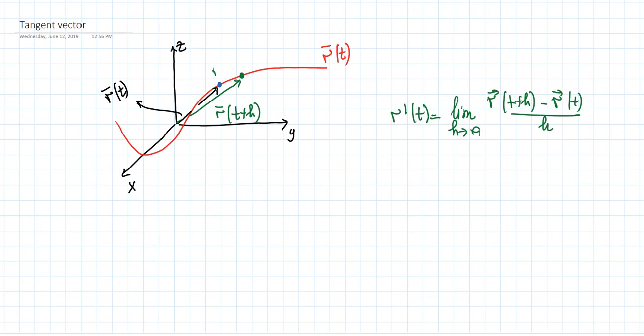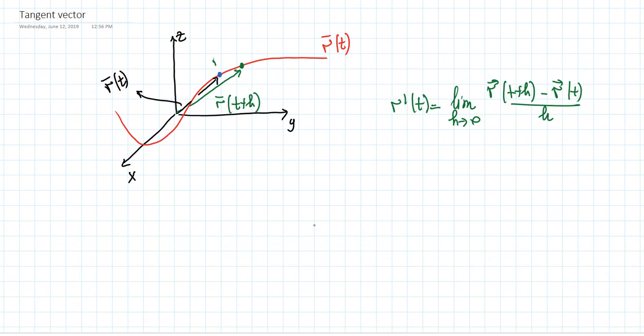If we're given two vectors and we subtract them, the subtraction of these two vectors gives us the vector between them. If the direction goes from negative to positive, this vector is R(t+h) minus R(t). The black one is R of t, the green one is R of t plus h, and their subtraction — R(t+h) minus R(t) — is the blue one, going from the black vector tip to the green vector tip.